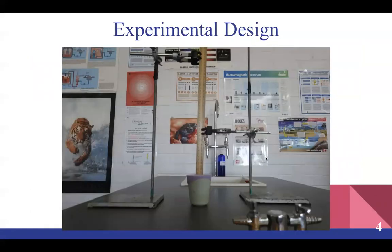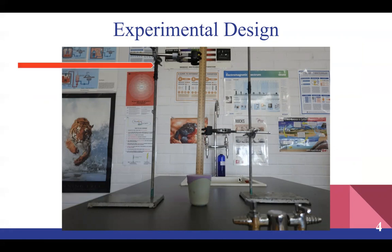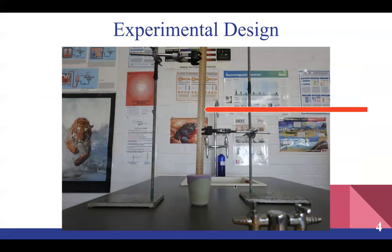This is the overall experimental design. This is the ball with the purple balloon, which served as a rubber membrane stretched over the top. This is the retort stand, which was used to hold the ruler, and the ruler was used to control the height at which the balls were dropped for all of the experiments.